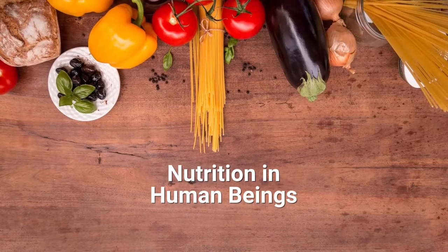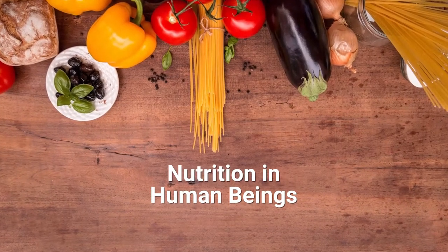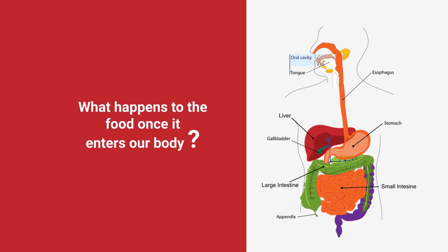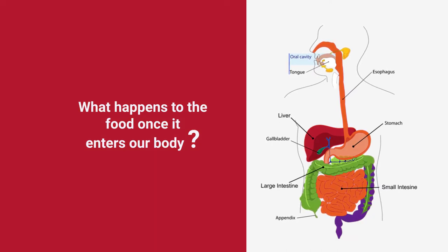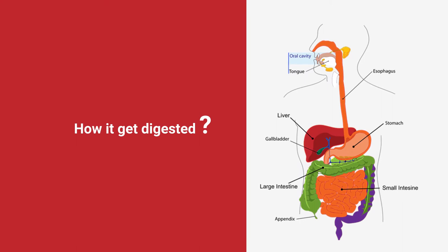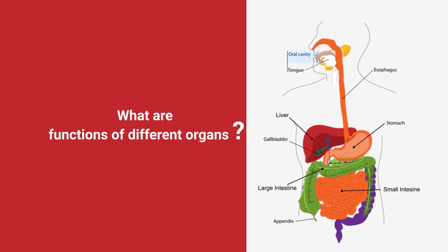Today I am going to deal with two basic concepts — one related to human beings and one related to plants. Let us start with nutrition in human beings. You can start with questions like: What happens to food once it enters our body? How does it get digested? Is there a system for digestion? What are the functions of the different organs?